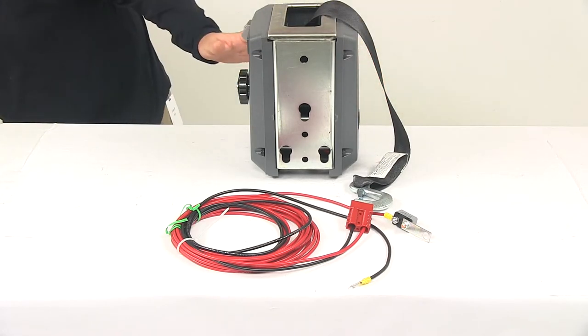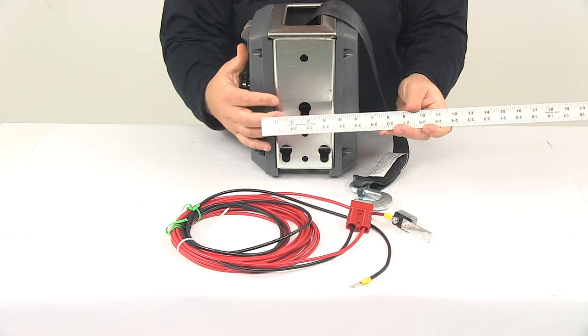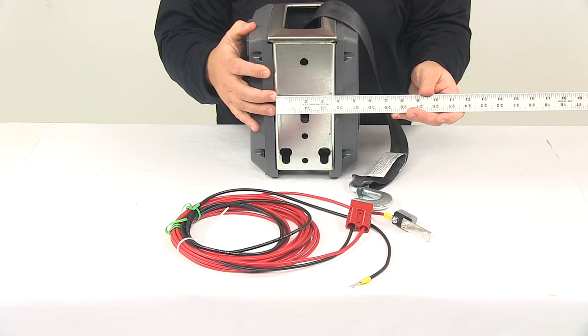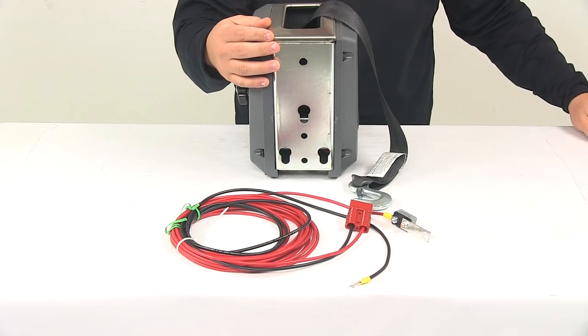The base plate itself, measuring that plate portion going this direction, gives us a measurement of about 3 and 7/8 of an inch wide. And then the length of that plate measures about 8 and 7/8 of an inch long.